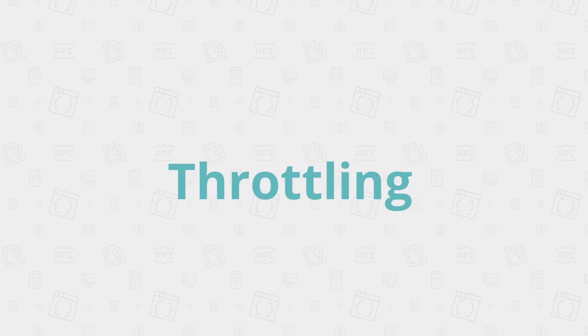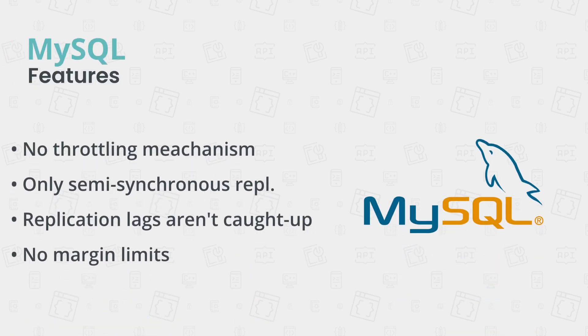That's a cool idea. The fancy term to describe this pattern is throttling, by the way. However, there is no direct mechanism in MySQL to do that. The closest would be semi-synchronous replication, but even that neither guarantees replication lag to be caught up nor to be within a reasonable margin. It is up to the user to identify the relevant replicas and ask what their current lag is. If you want to learn about the difference between asynchronous, synchronous, and semi-synchronous replication, there is a dedicated video on the topic linked in the top right corner and in the video description below.